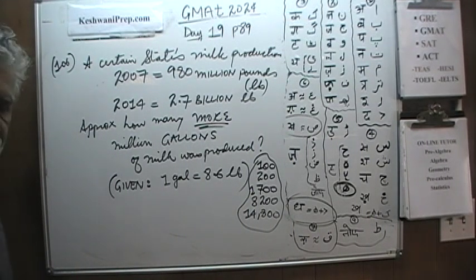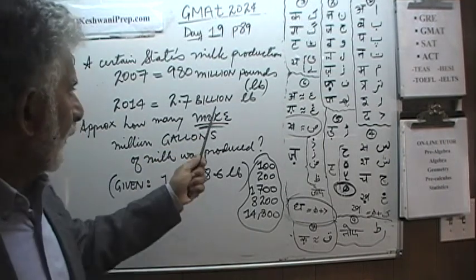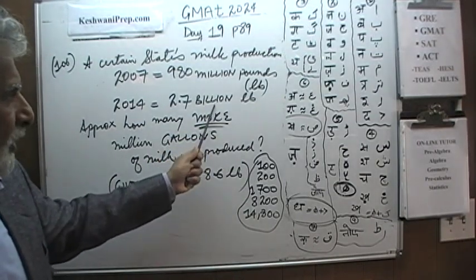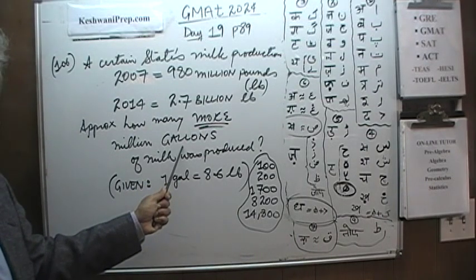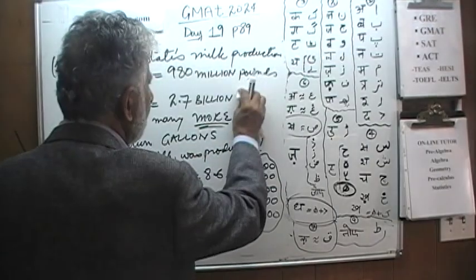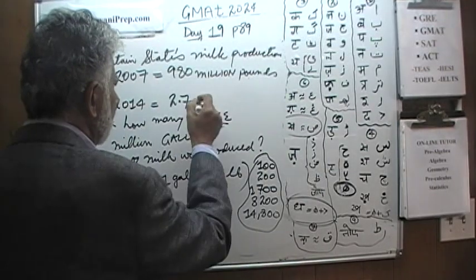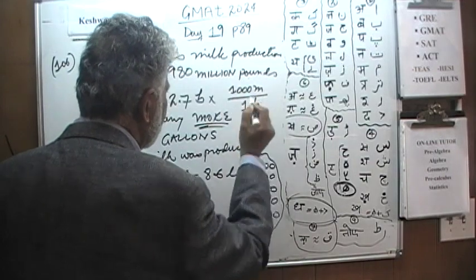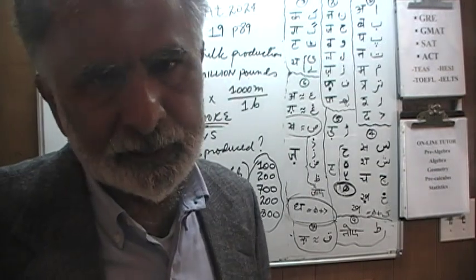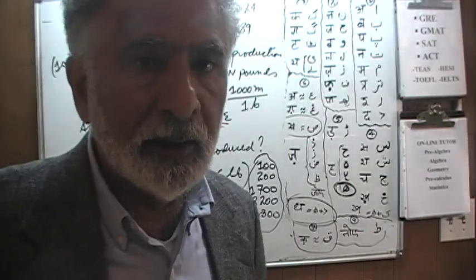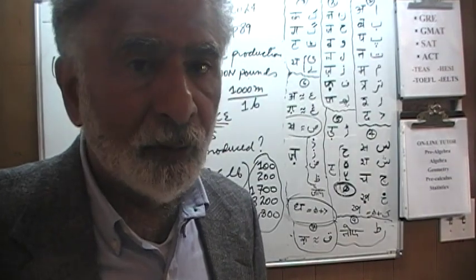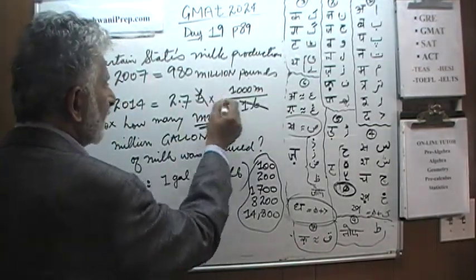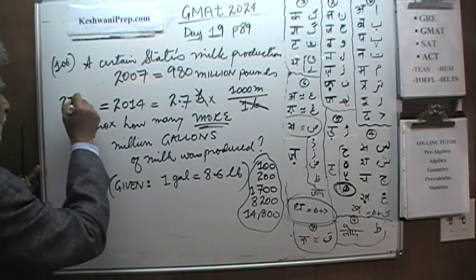Let's begin. The first thing we need to do is convert 2.7 billion into millions, since the other figure is in millions. One billion equals one thousand million, so 2.7 billion equals 2700 million pounds. In 2007 we had 980 million pounds. Since the problem uses the word 'approximately,' we approximate 980 as 1000, giving us a difference of 1700 million pounds.